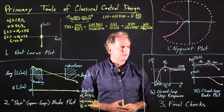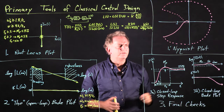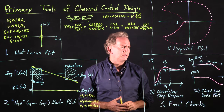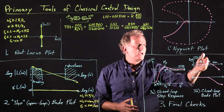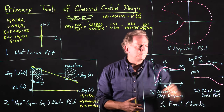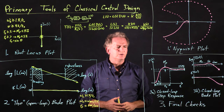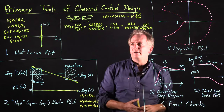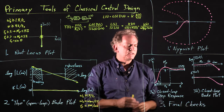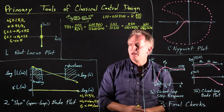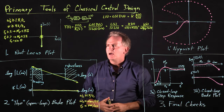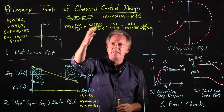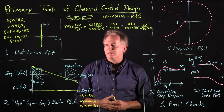Resonances can generally be harmful if you have certain frequencies at which the output of the system is large — that can cause failure in engineering systems. So we want to make sure that as we close the control loop, we don't excite any bad resonances. We can check both the step response and the closed-loop Bode plot once we have proposed a D(s) in order to see how well we've done.